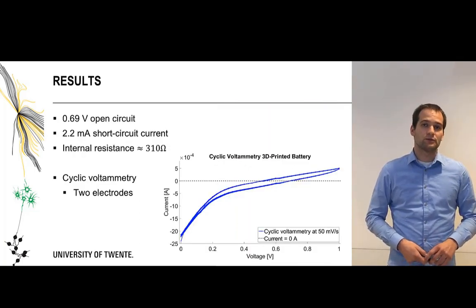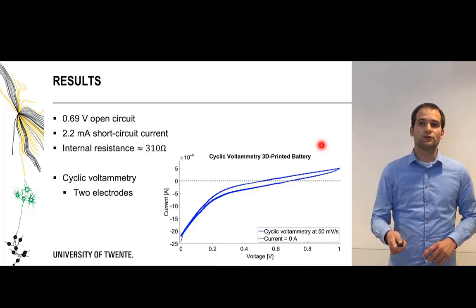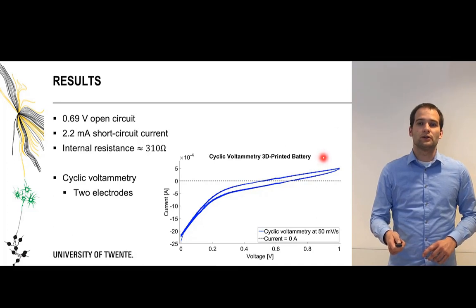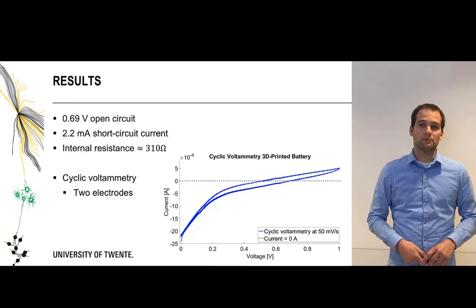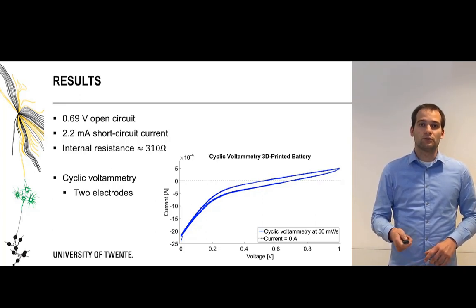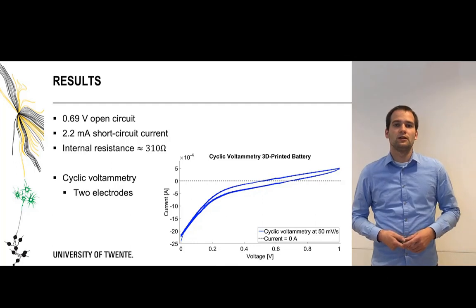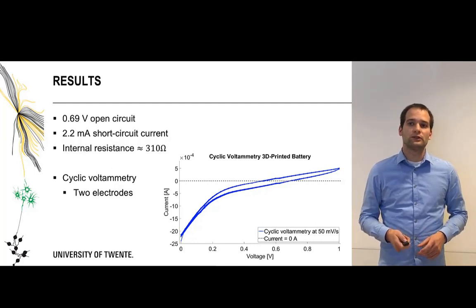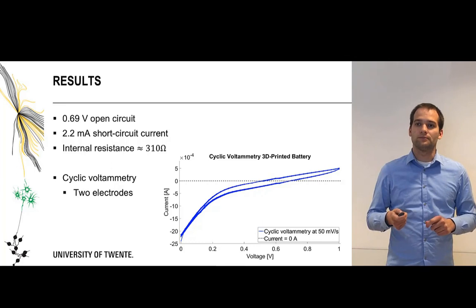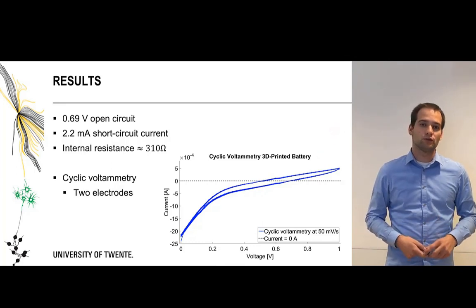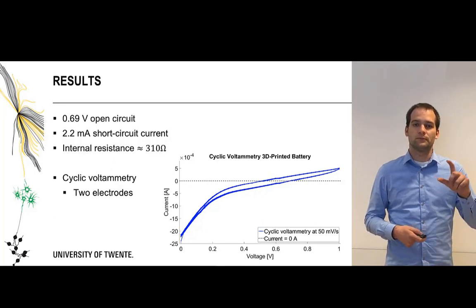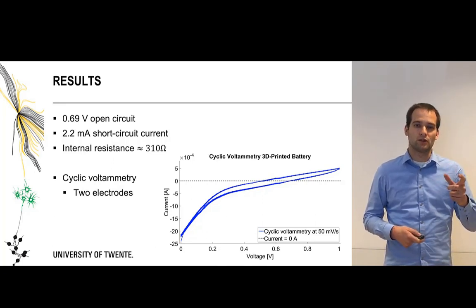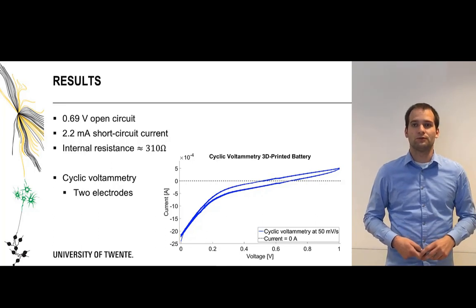For the characterization of the battery we've performed cyclic voltammetry where we found that the open circuit voltage is around 0.69 volts and the short circuit current is around 2.2 milliamps. The internal resistance was found to be 310 ohms and during the cyclic voltammetry we swept six cycles with 50 millivolts per second rate where we use two electrodes since we only need to know the difference between the zinc and the copper electrode and we don't need to know absolute voltage.